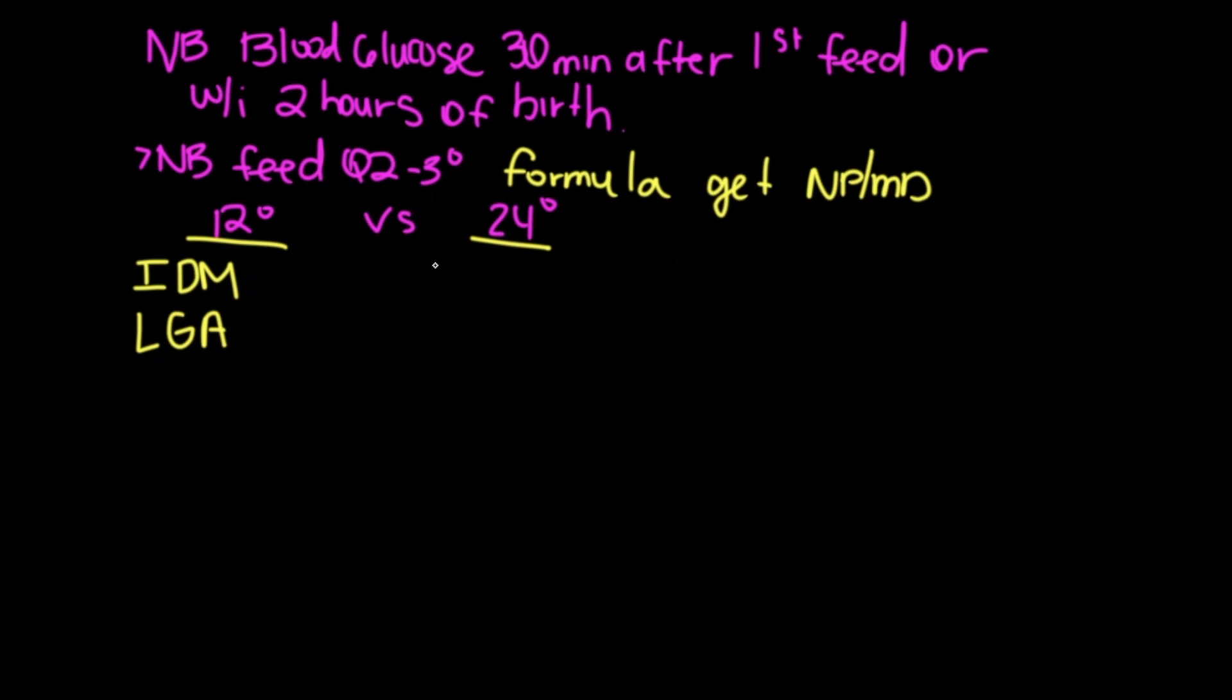24-hour blood sugar checks will be your late preterm, so it's less than 37 weeks, or your small for gestational age group as well. And the last three blood glucose checks should at least be greater than 45 milligrams per deciliter. And 45 milligrams per deciliter is your standard for a normal blood glucose reading for a newborn.